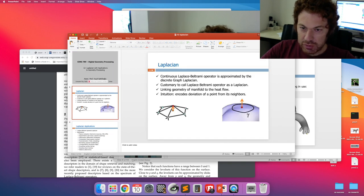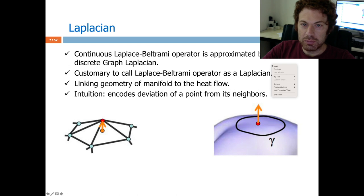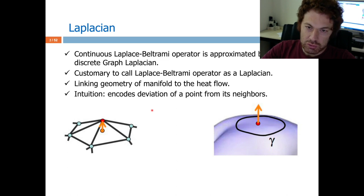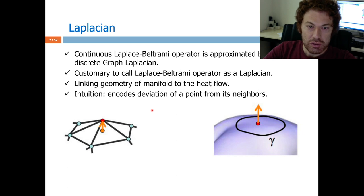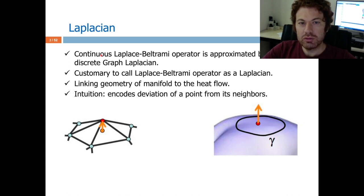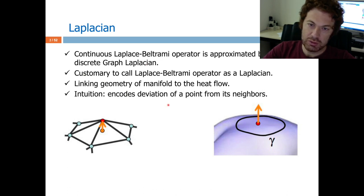What is the Laplacian? You should notice that it is directly related to the continuous Laplace-Beltrami operator, whose purpose is to link the geometry of the manifold to the heat flow. There is this connection with physics, and the heat flow actually captures lots of geometric information. We do that with the continuous Laplace-Beltrami operator, and in practice we go to the approximation using the discrete graph Laplacian.